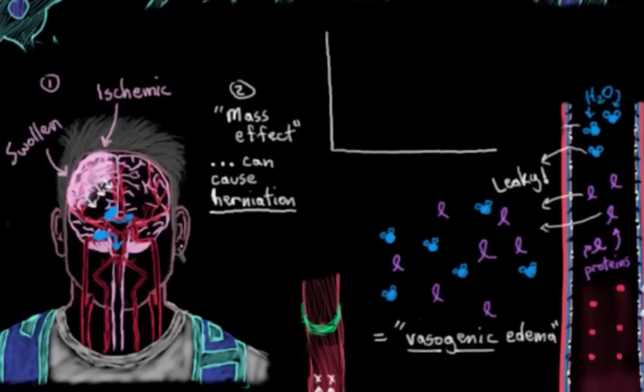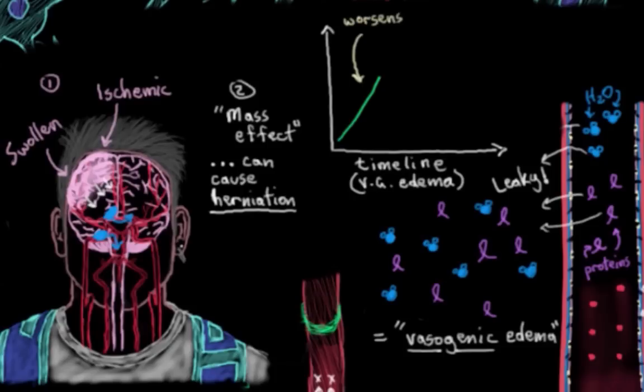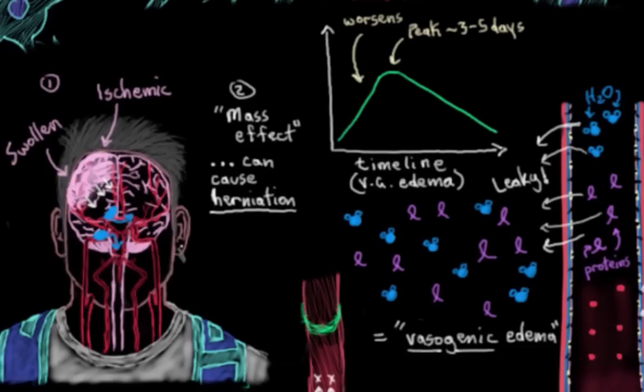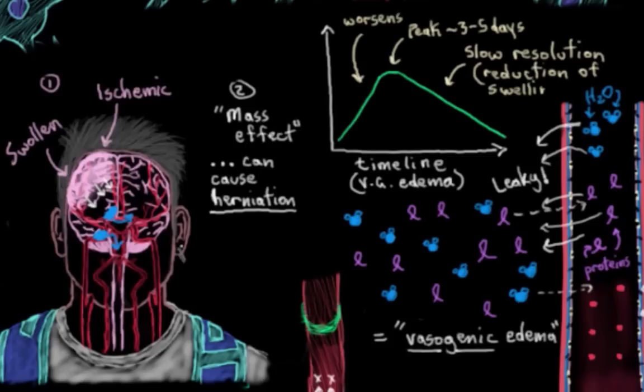And what sort of timeline are we looking at then for this swelling? Well, this swelling that occurs as a result of this vasogenic edema, it tends to get worse over a few days as more water and protein leak out of the blood vessels in the area. And it peaks at roughly three to five days post-stroke. And then after that, it slowly starts to resolve over the next few weeks as the protein and the water slowly get reabsorbed back into the circulation. So this of course is a good thing. And it brings the cerebral swelling down.